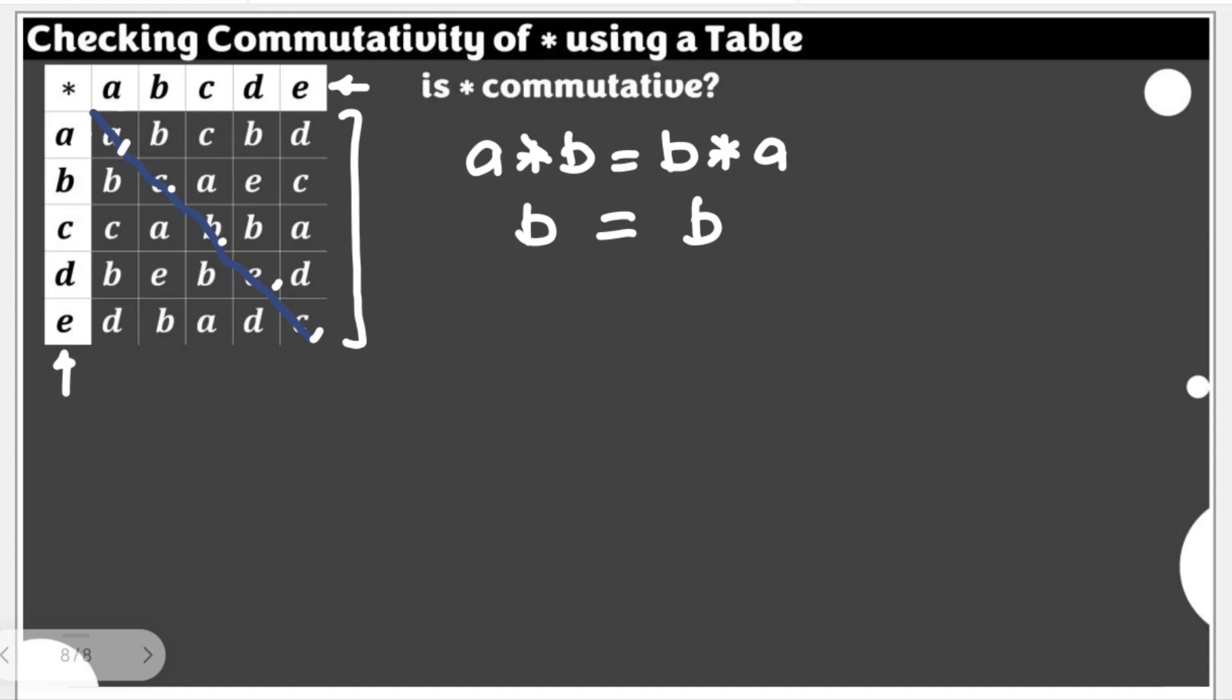If we're going to check all of those entries, those entries just for that specific row and column, we can say that they are commutative. But if we're going to get closer, we have a, e, c, a, e, b. Here comes the difference.